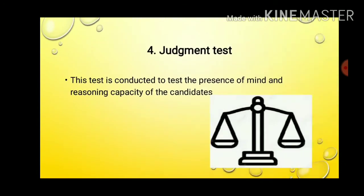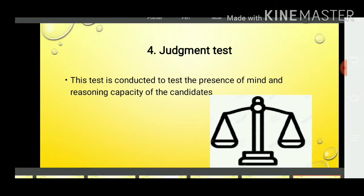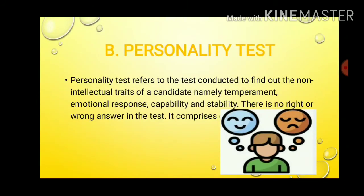The fourth type under ability tests is the judgment test. This test is conducted to test the presence of mind and reasoning capacity of the candidates. These are all the types under the ability test category.